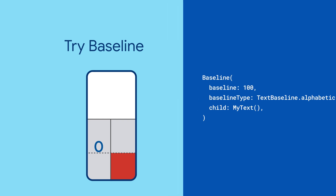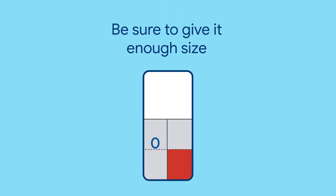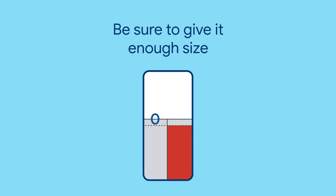But what if the widget is 100 pixels tall, but the baseline is only set to 50? Oh no — it's an overflow, and that widget is about to get cozy with its neighbors.